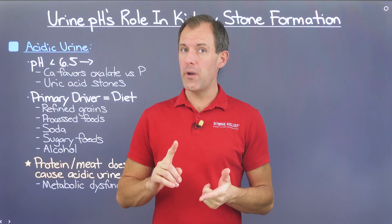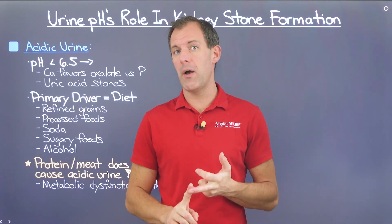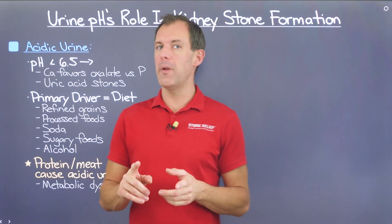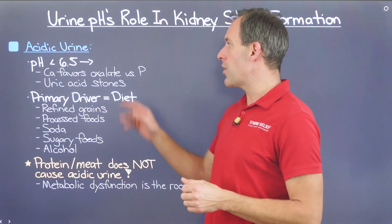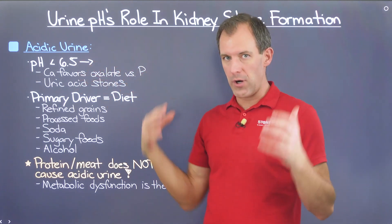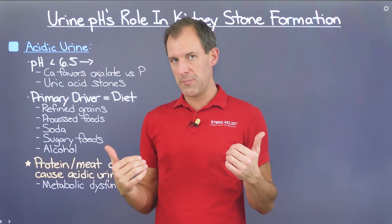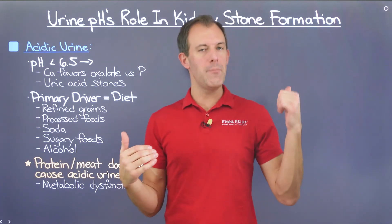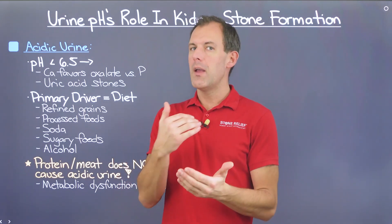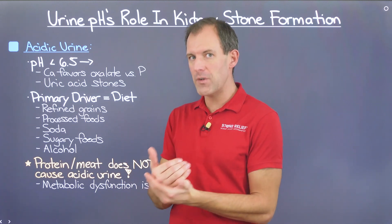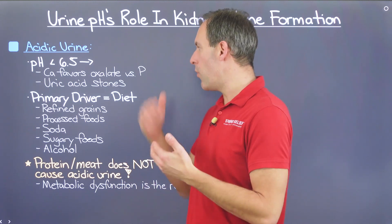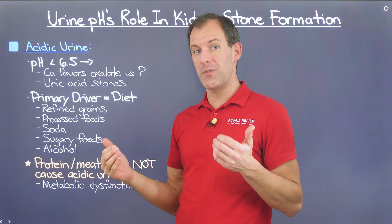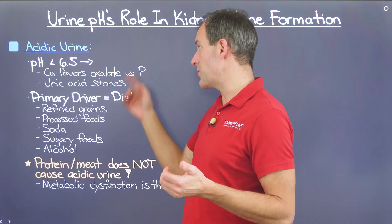Now let's evaluate what happens if our urine is acidic. Acidic urine is generally regarded as anything under 6.5. When urine is acidic, calcium favors binding with oxalate, so the more acidic your urine is, the more favorable an environment we're creating for calcium and oxalate to bind together.